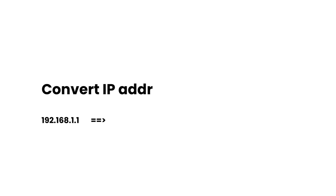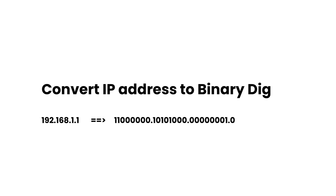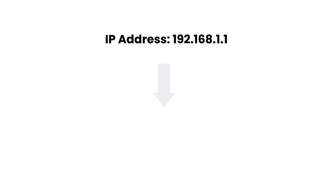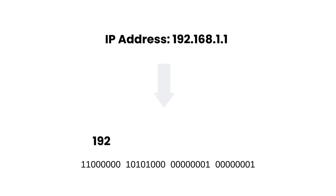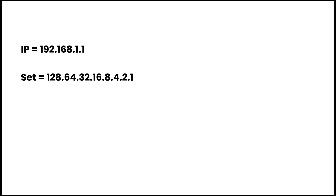In this video, we are converting IP addresses to binary numbers with an easy method. For example, our IP address is 192.168.1.1, which contains four octets. Take 192 and convert it to eight binary digits, take 168 and convert it to eight binary digits. First, write down the IP address 192.168.1.1.